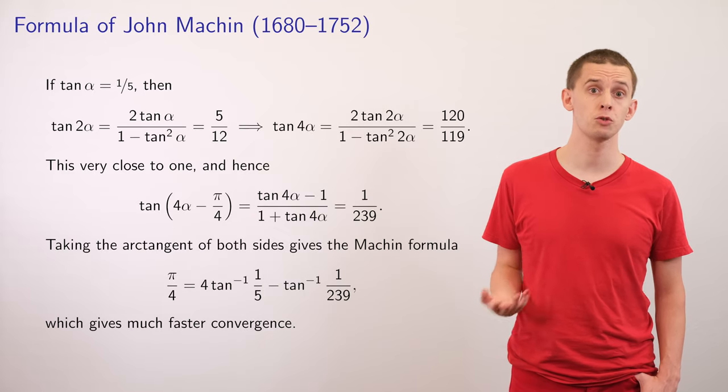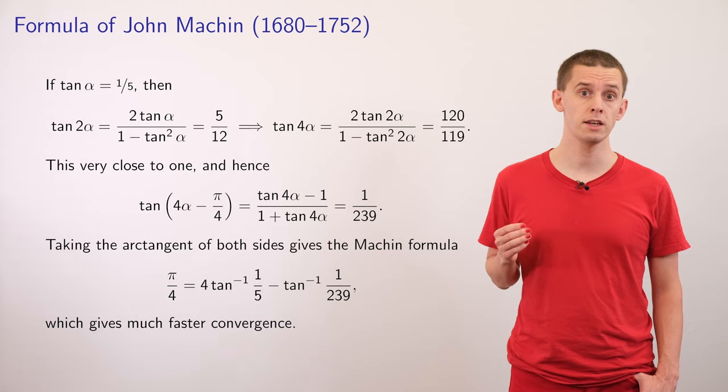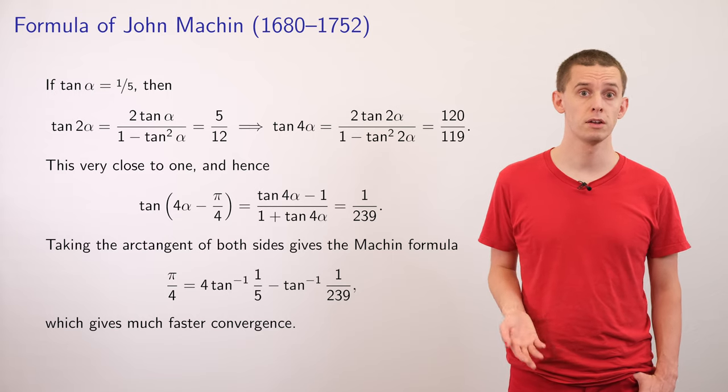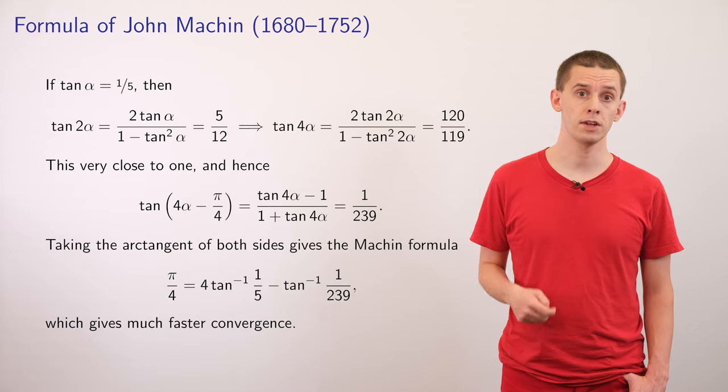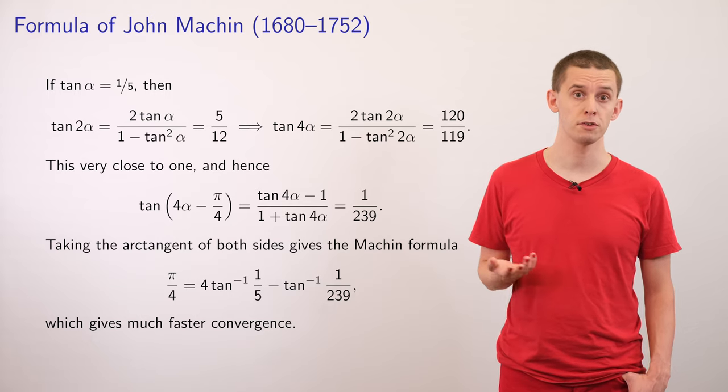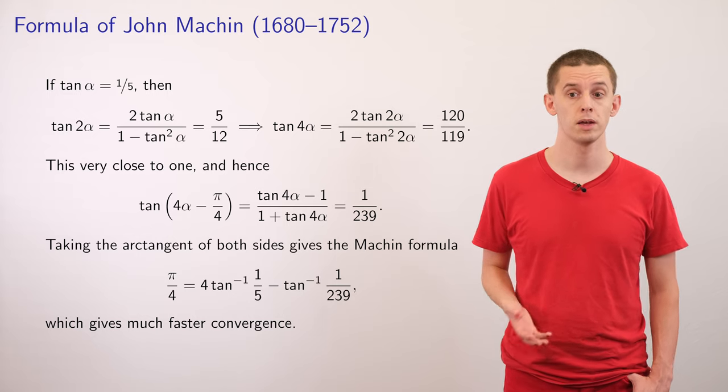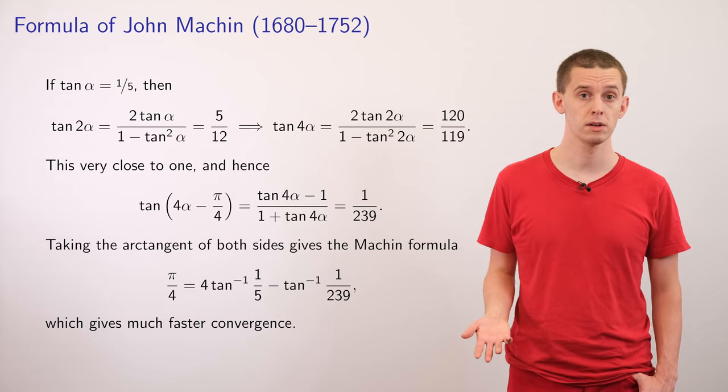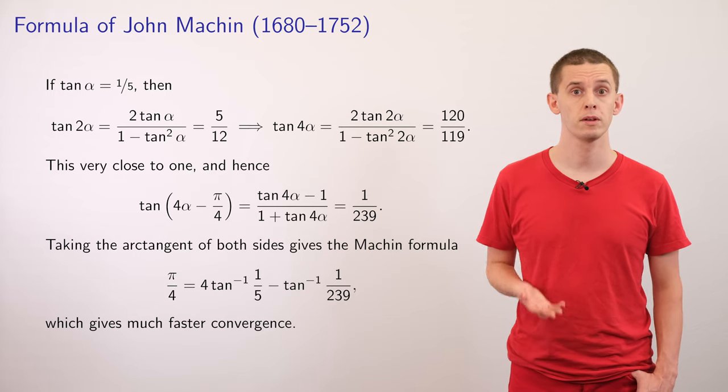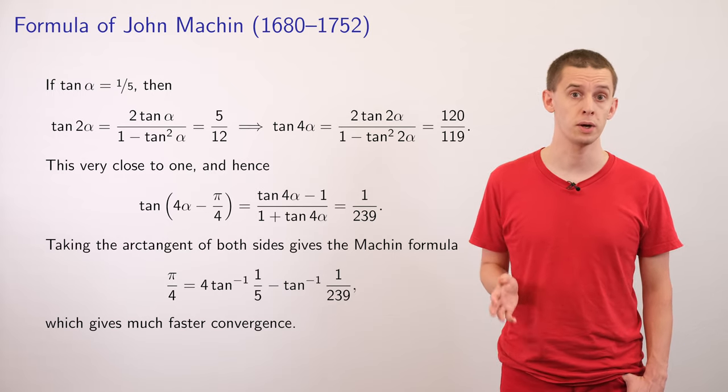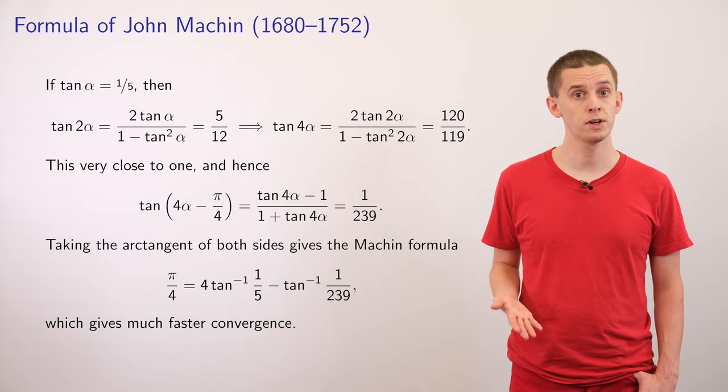An advancement to this was made by John Machin, an English astronomer. And he defined the angle alpha such that the tangent of alpha is equal to a fifth. And if you then use a double angle formula for tangent, you can write down that tan of 2 alpha is equal to 5 twelfths. And applying that again, you find that tan of 4 alpha is equal to 120 over 119.